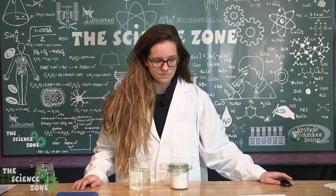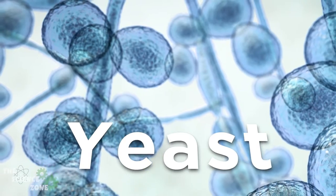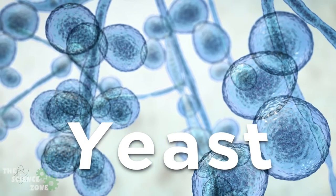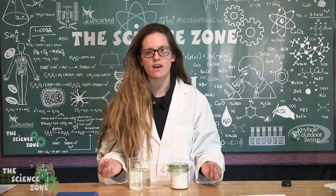Yeast is a type of fungi that likes to feed on sugars. Scientists have identified over 1,500 different types of yeast. It's commonly found on the skins of fruits and vegetables, in the soils, and even on the skin of humans and animals.